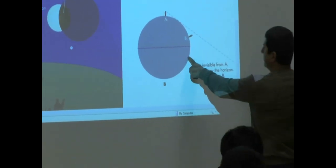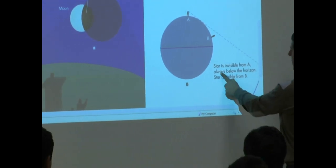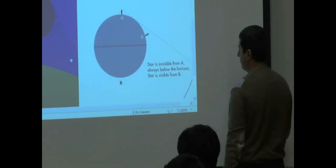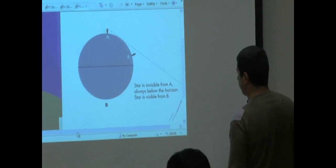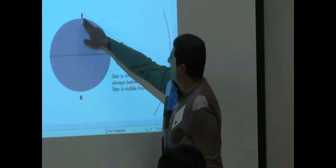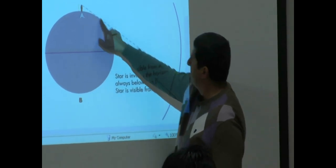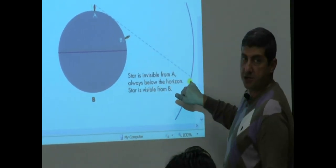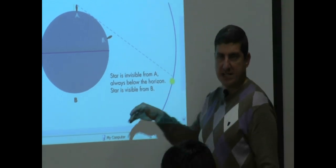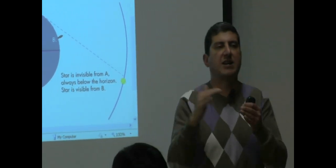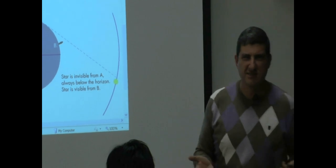And this is his first argument. Star is invisible from A, always below the horizon. Star is visible from B. So he looks over here - if you're over here, you cannot see this star. But if you go over here, you can see this star. So that's the part of the argument - the sky looks different from different parts of the earth.